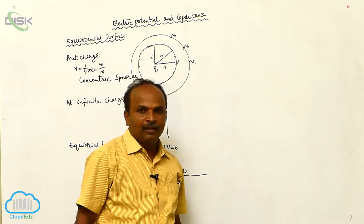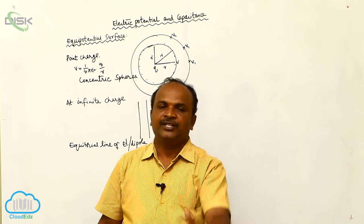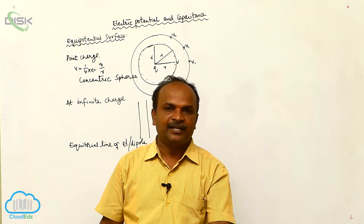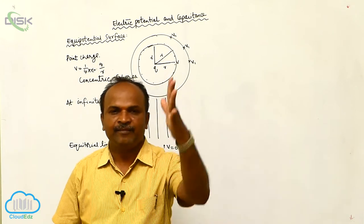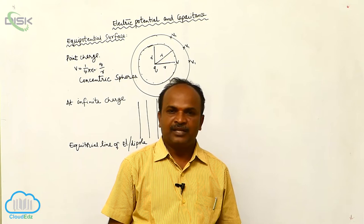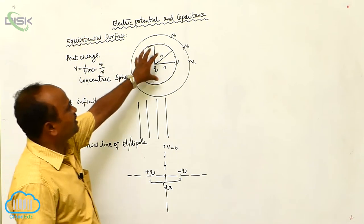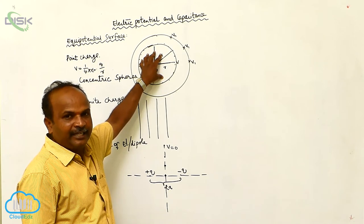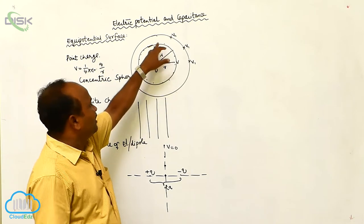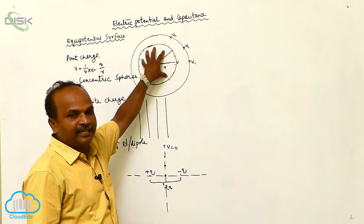Once again — what is the equipotential surface? The surface in the electric field on which the potential is the same at every point is called an equipotential surface. The locus of all points at which the potential is the same is also known as an equipotential surface. In the case of a point charge, equipotential surfaces are concentric spheres of different radii. At the center there is a charge; on the sphere, at every point the potential is the same, so that sphere is an equipotential surface.